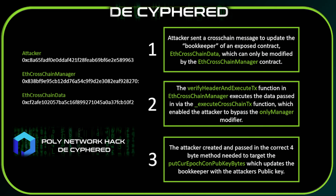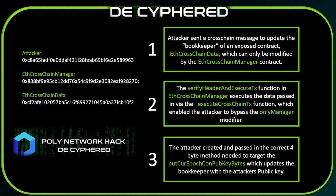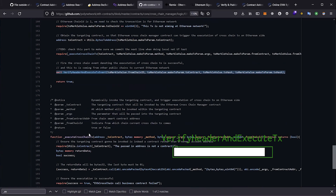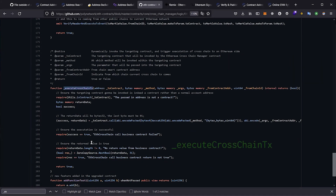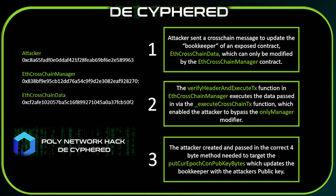When we analyze the attack, we can see that it mainly worked because there's a keeper within a contract called ETH cross-chain data, which can be modified by another separate contract called ETH cross-chain manager. The ETH cross-chain manager contract has a function called verify header and execute transaction, and this function allows the ETH cross-chain manager contract to execute data passed in by the attacker. It does this through a function called execute cross-chain transaction. Leveraging this function, the attacker can pass in carefully constructed data to update the keeper of the ETH cross-chain data contract, calling another function that would update the bookkeepers with the public keys of the attacker.